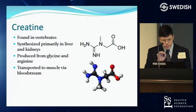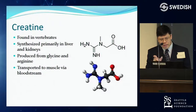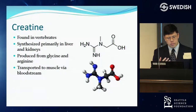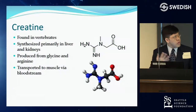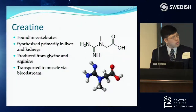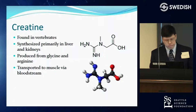Starting at the very beginning: what is creatine? Creatine is found in vertebrates, produced by the body but also absorbable as a supplement. It's primarily synthesized in the liver and kidneys, made from two amino acids — glycine and arginine — and can be transported to the muscle via the bloodstream.